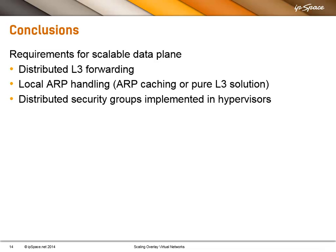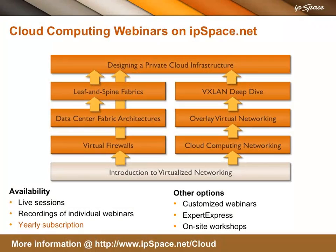For a scalable data plane, as we've seen, we need distributed layer 2 and layer 3 forwarding. It's ideal to have local ARP handling — either by caching ARP requests and replies, or using a pure layer 3 solution like Microsoft Hyper-V. We should also have distributed network services, with security groups being the easiest to implement since they're implemented directly in the hypervisors. If you liked this video, go to ipspace.net/cloud to explore other overlay virtual networking webinars.